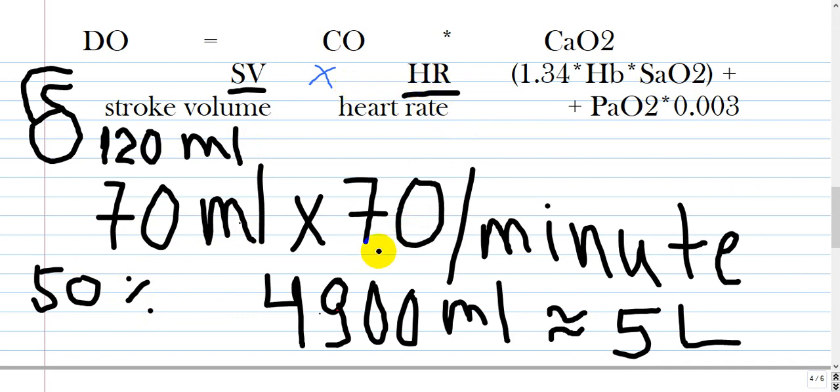If you have 70 beats per minute, stroke volume times heart rate is around 4900 ml, which is around 5 liters of blood per minute. So delivery of oxygen is cardiac output times concentration of oxygen in the blood.